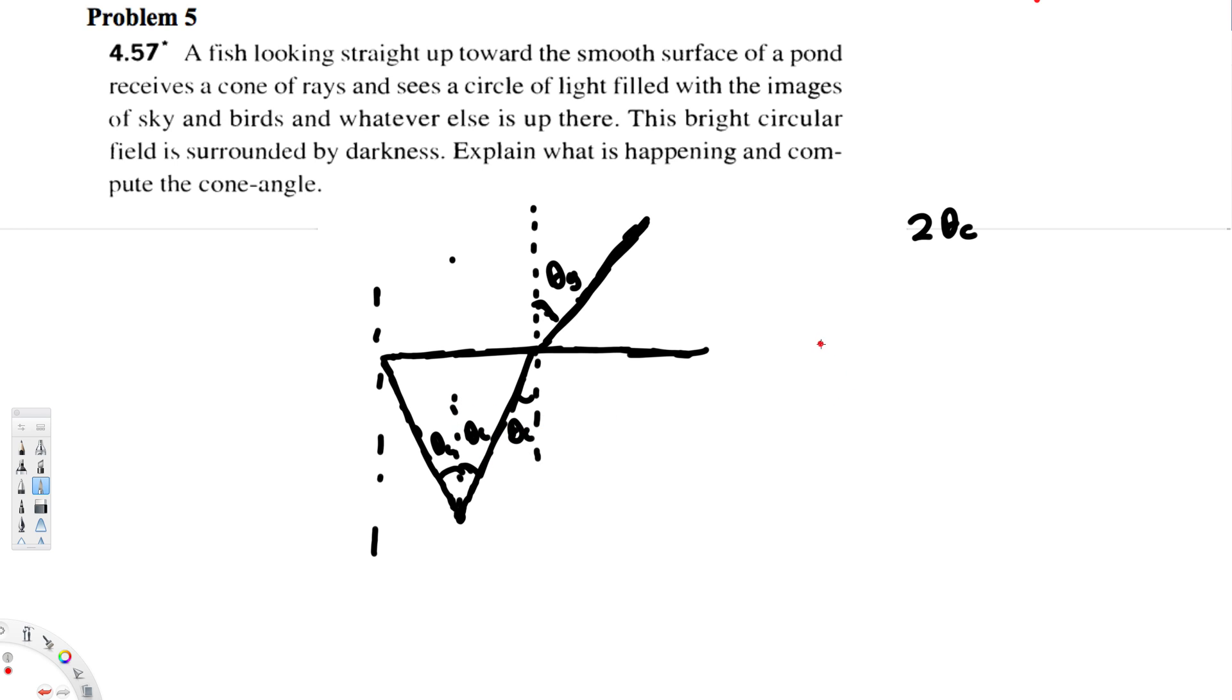So sine theta_c is going to be... actually one over index of refraction of this one. So this one is one over n_w. This medium is water, so this is going to be n_w. Here we are trying to find theta_c. Therefore, theta_c is going to be sine inverse...